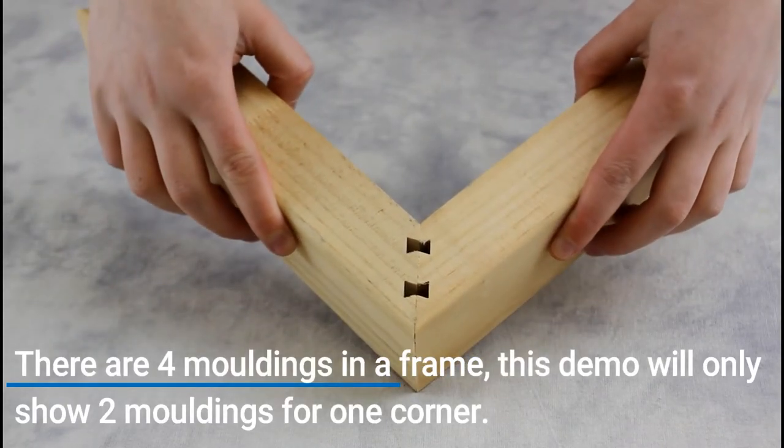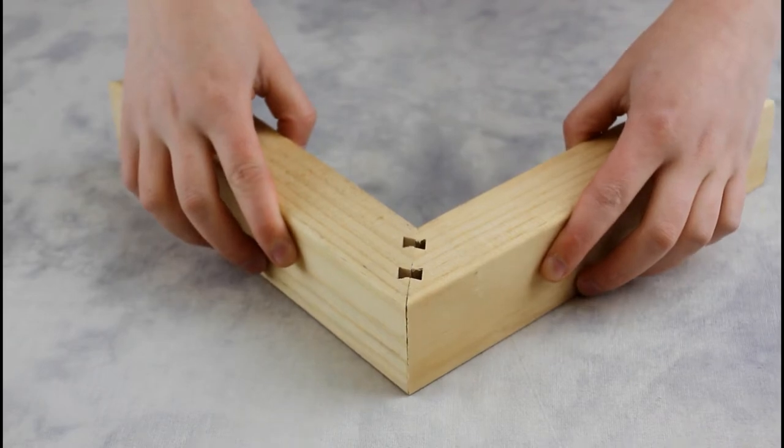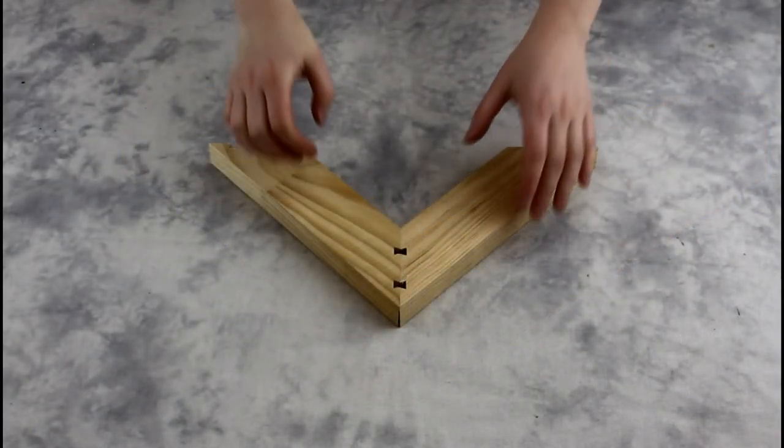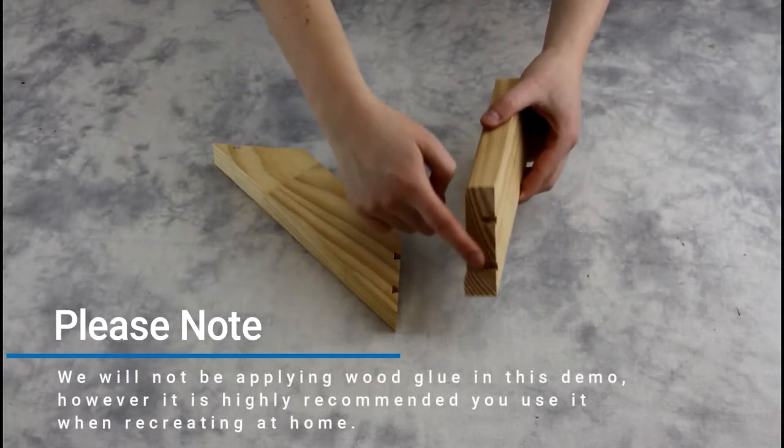We will then place the two moldings together to create a 90 degree angle, and notice how the combined keyholes create a bow tie shape.